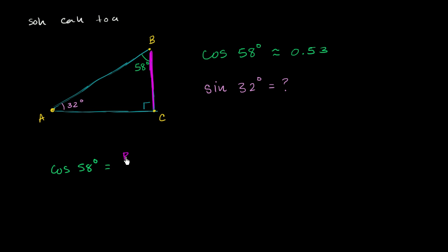So this is going to be the adjacent, the length of the adjacent side BC, over the length of the hypotenuse. The length of the hypotenuse is AB.